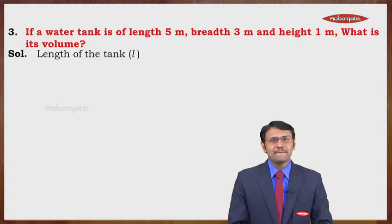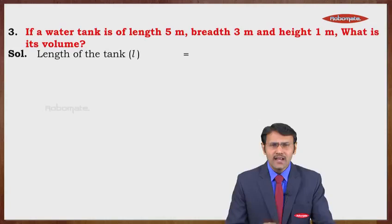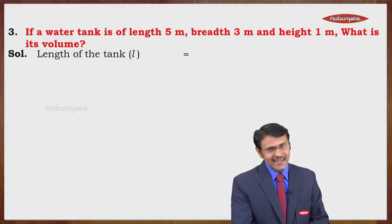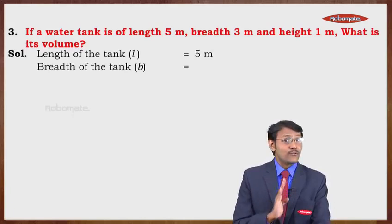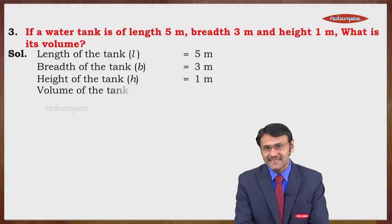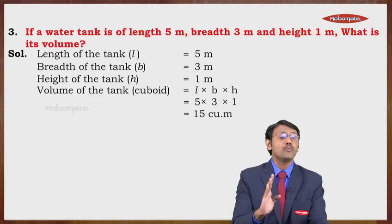Question number three: if a water tank is of length 5 meters, breadth 3 meters, and height 1 meter, find its volume. A water tank has the shape of a cuboid. We write: L = 5 m, B = 3 m, H = 1 m. Volume of tank = L × B × H = 5 × 3 × 1 = 15 cubic meters.